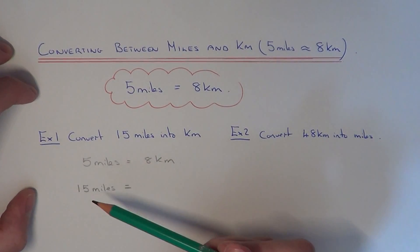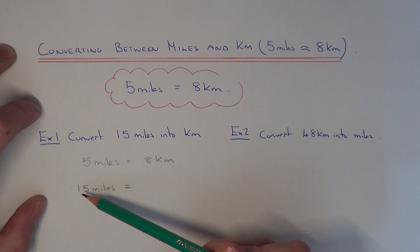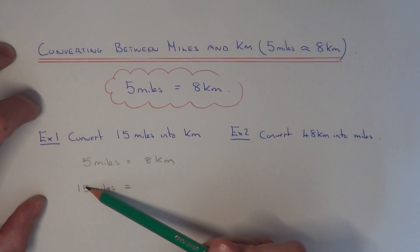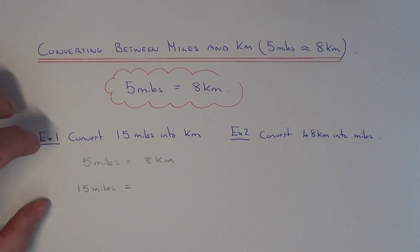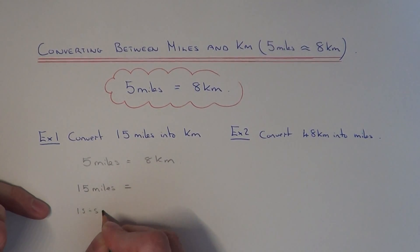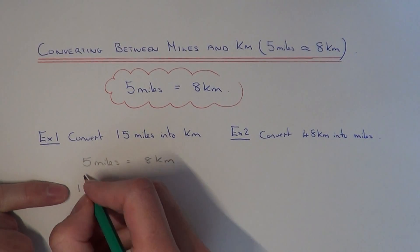We need to figure out how many times bigger 15 is than 5. You do this by working out 15 divided by 5, which is 3. So 15 is 3 times bigger than 5.